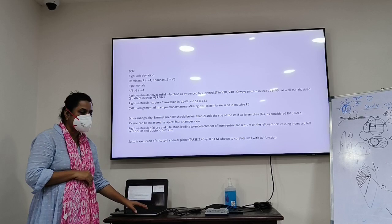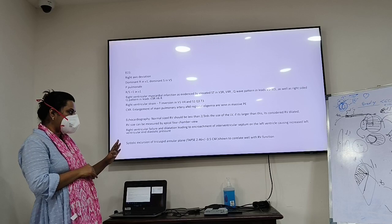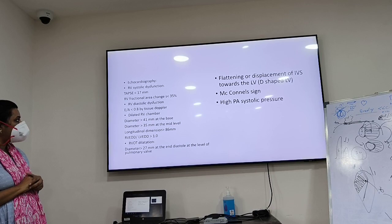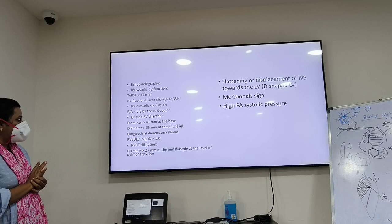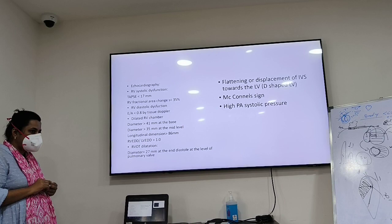In echocardiography, the normal TAPSE will be 2.4 cm. TAPSE is measured at the lateral side of the tricuspid valve — put pulsed-wave Doppler or M-mode there and measure the displacement. If TAPSE is less than 17 mm (1.7 cm), it shows RV systolic dysfunction. RV fractional area change less than 35% also indicates dysfunction. RV strain can be done with tissue Doppler imaging.